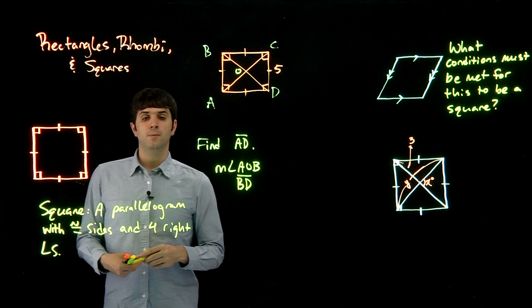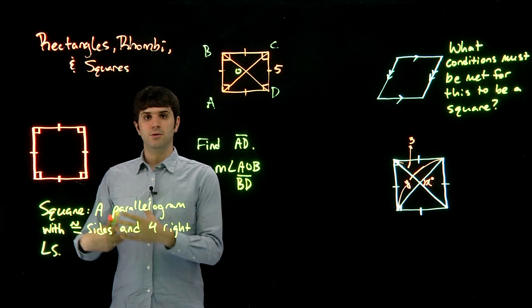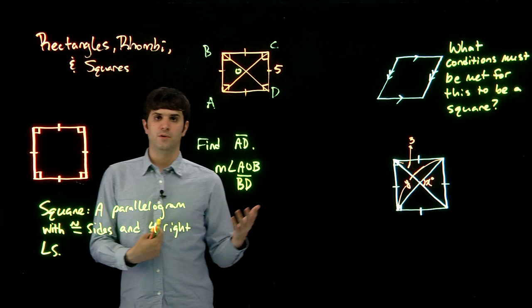So you might notice that this is similar to a rhombi, this is similar to a rectangle. Actually a square is both a rhombi and a rectangle. So a square is always a rhombi and always a rectangle.